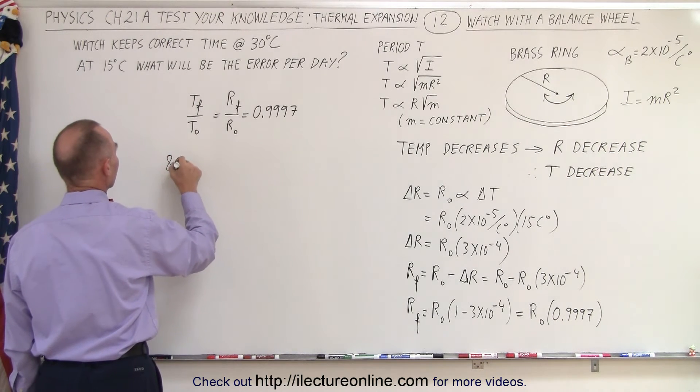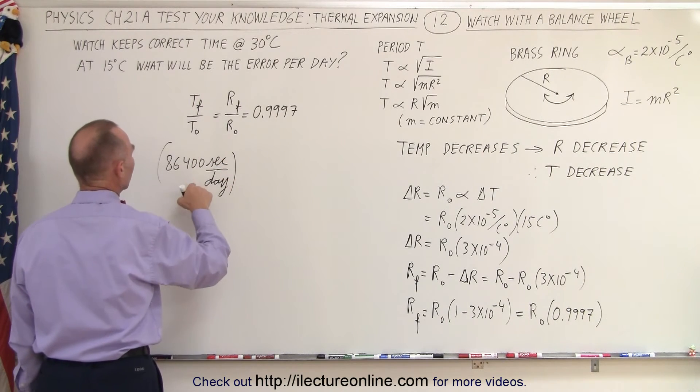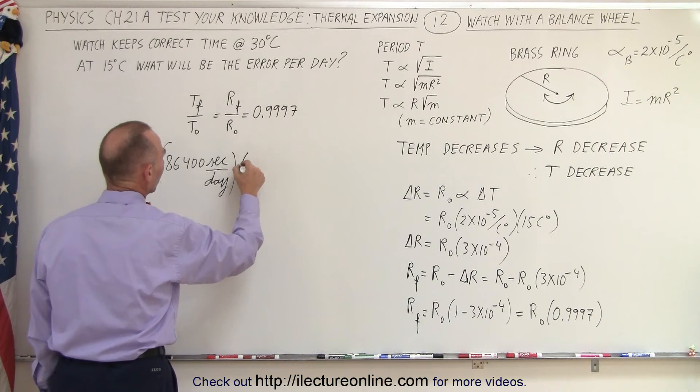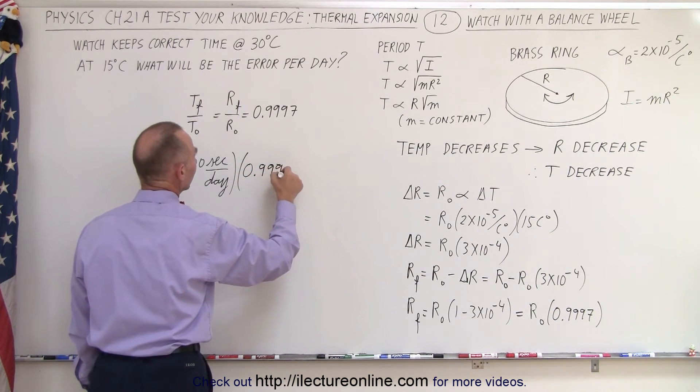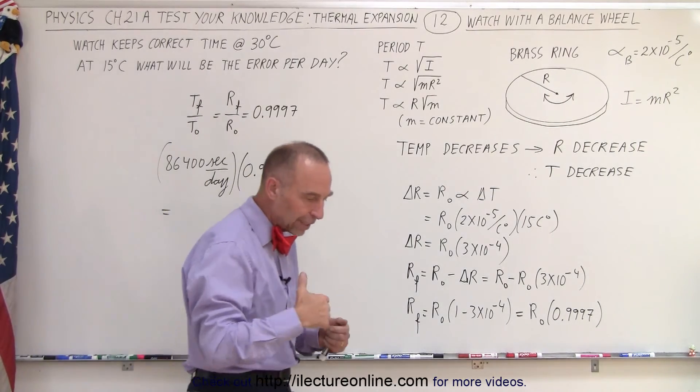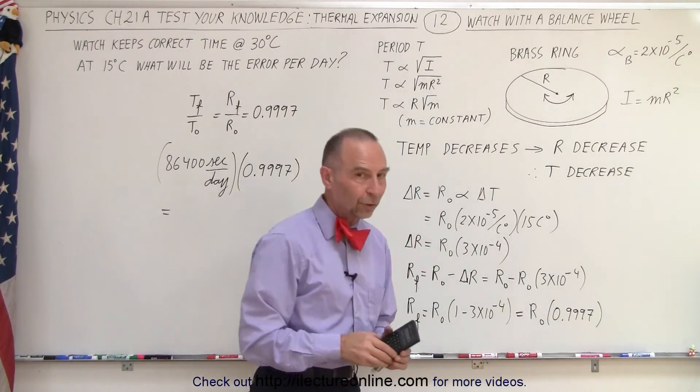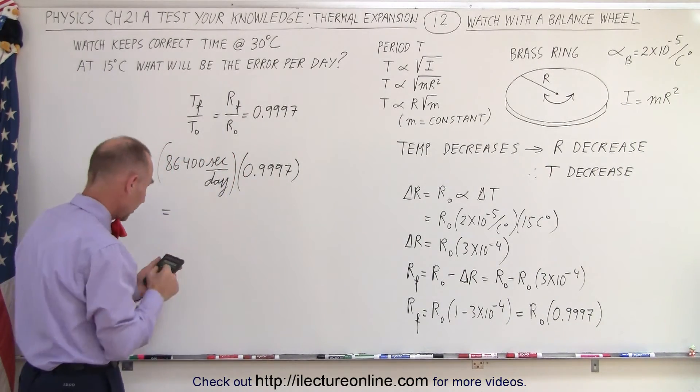Now if we take the number of seconds, 86,400 seconds per day, that is if the clock runs normally, but now we're going to multiply that times 0.9997. Let's see what that is. So that would be the new number of seconds per day. Of course, those aren't real seconds. Those are the watch's seconds, not the real seconds. But let's see how much that changes.